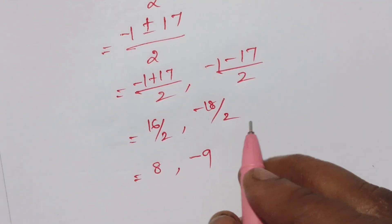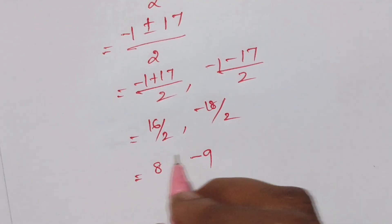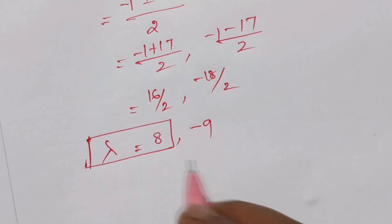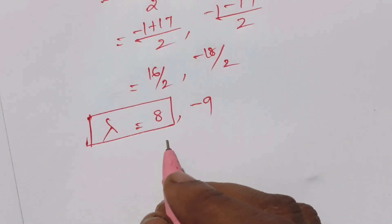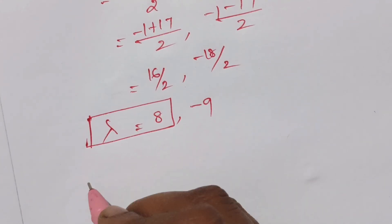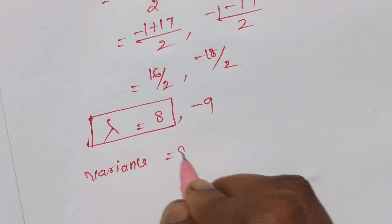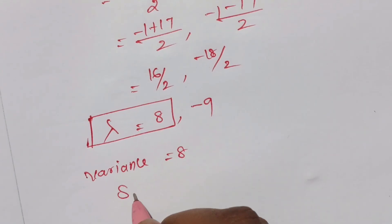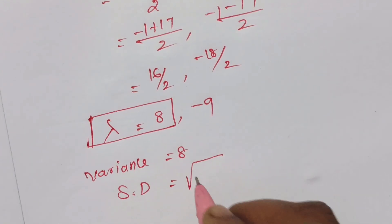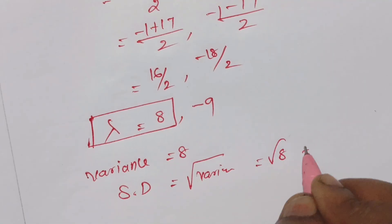Since lambda must always be a positive value, lambda equals 8. Therefore, variance equals 8. Standard deviation equals root of variance, so root of 8 equals 2 root 2.